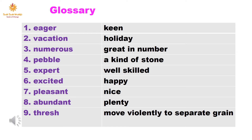Eighth: abundant — meaning plenty. Ninth: threshold — meaning to move violently to separate grain from the husk.